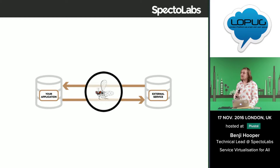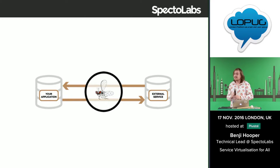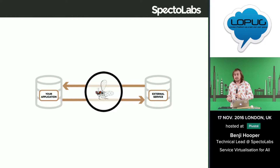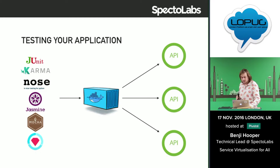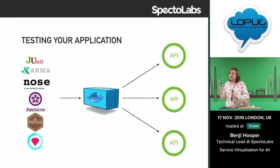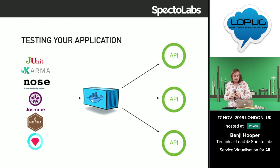I realize I've explained all the details apart from what it actually does. Hoverfly is a service virtualization tool, or you could call it an API simulation tool. The idea is that you use it to capture requests being sent by your application so that you can record the responses from its dependencies.